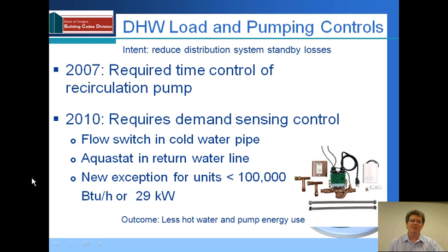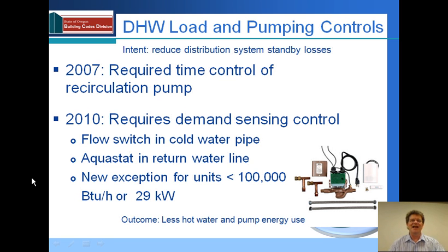Let's talk about that first case of domestic hot water. In this type of system, it's interesting that the heat lost from the piping that runs throughout the building can be significantly greater than the heat lost from the tank. As a result, the old code required time control of the recirculation pump so that at least after hours that pump was shut off. The primary savings here is not so much the pump energy, as these pumps are pretty small.